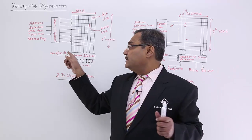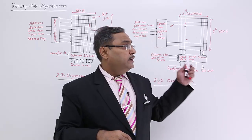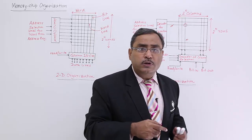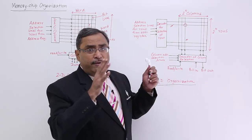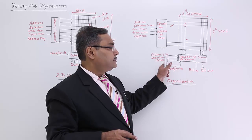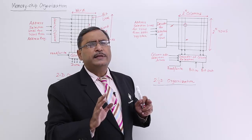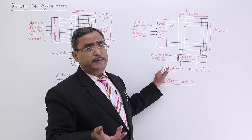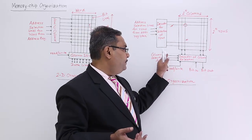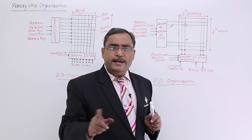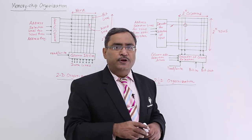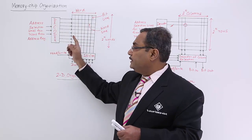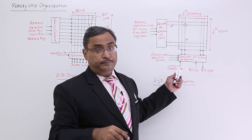Now let us go for the comparisons. In 2D, the number of column output lines is hardware-fixed, but in 2 and half D, how many bits we get against a single word is decided by how many circuits work in parallel. In 2 and half D, the full address bits are divided into two parts — some go to the row decoder, some to the column decoder. For a 6-bit address, 3 bits give 8 rows and 3 bits give 8 columns, resulting in 64 junction points, whereas in 2D all 6 bits feed one decoder producing 64 horizontal lines, requiring more complicated hardware.